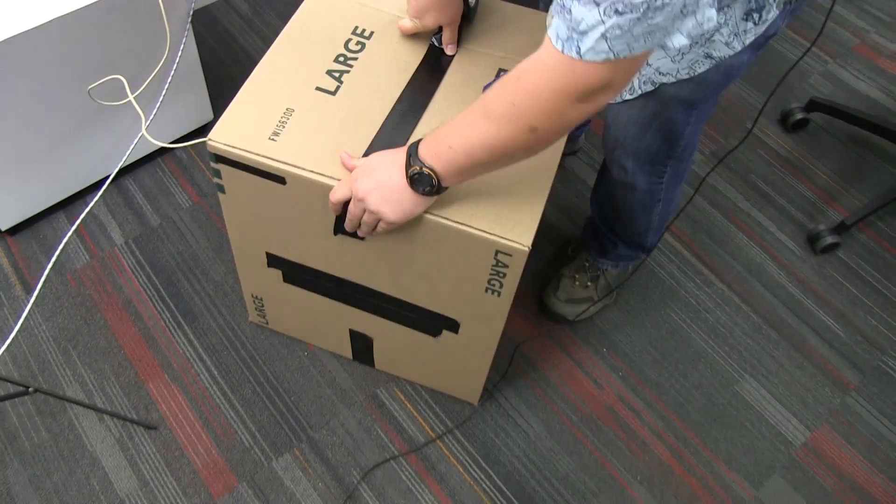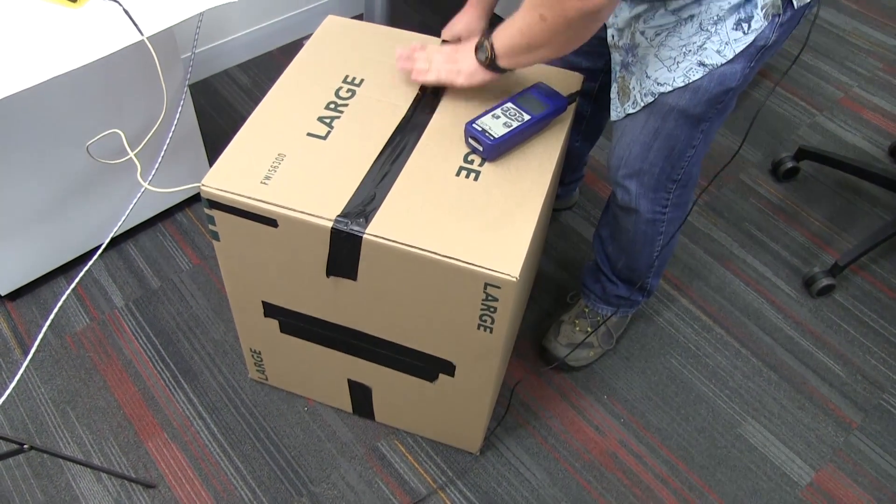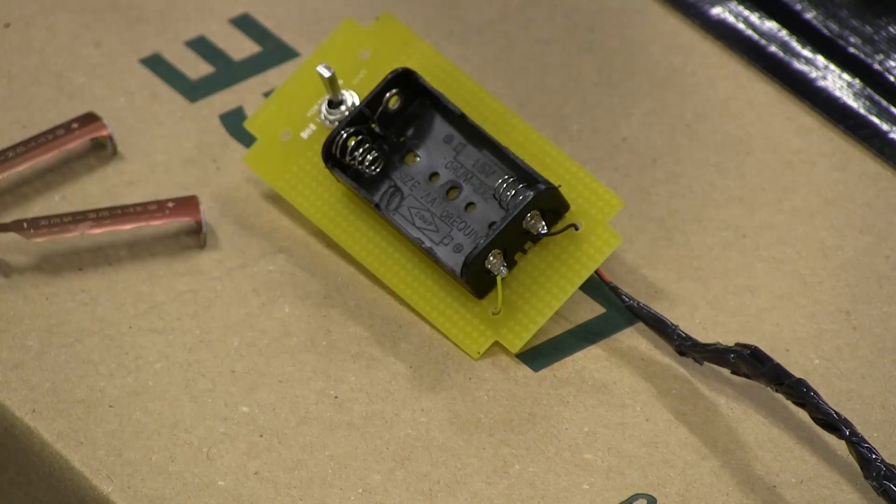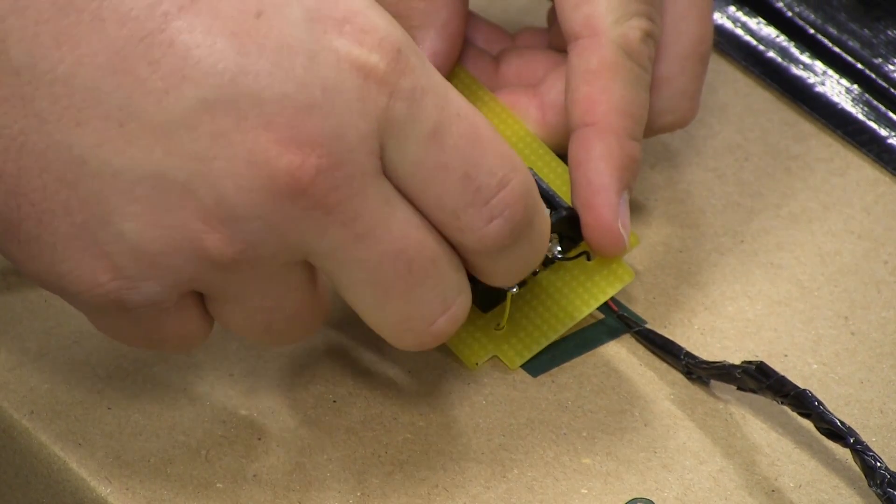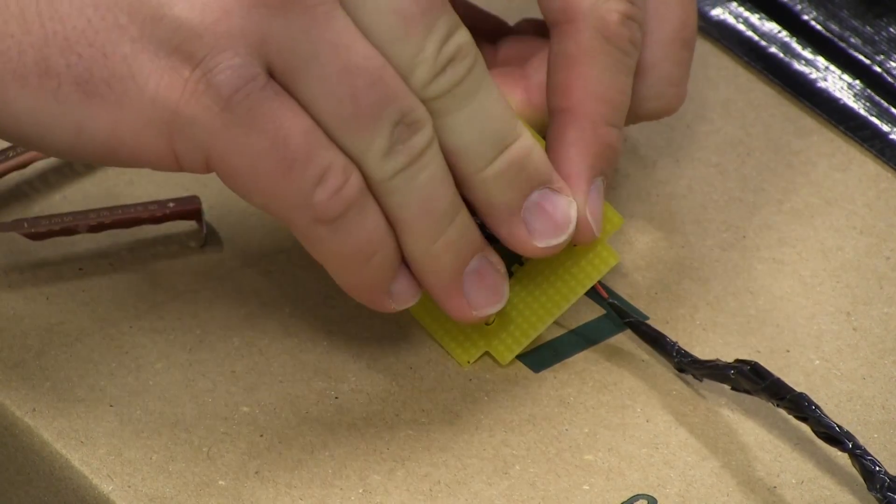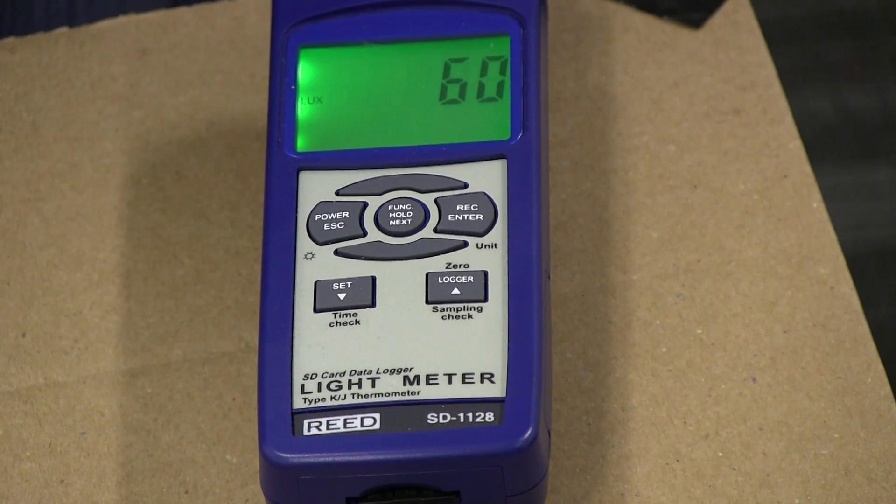We completely seal the box to avoid any external light intrusion. We run the test with two fresh AA batteries and measure the flashlight brightness and log the data. The meter shows 60 lux at the beginning of the test.